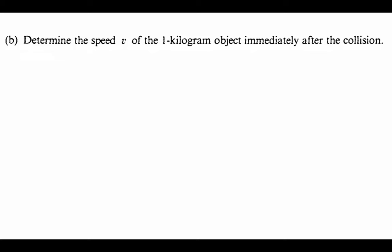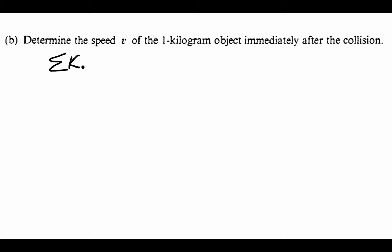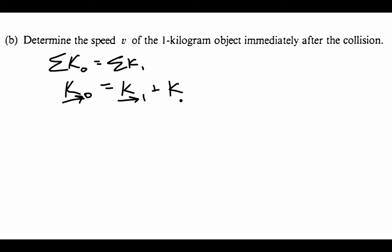Part B asks us to determine the speed V of the one kilogram object immediately after the collision. Now we're in good shape because we can use the elasticity — kinetic energy conservation during the collision. The total kinetic energy beforehand equals the total kinetic energy afterward: kinetic energy of the object plus kinetic energy of the rotating bar.